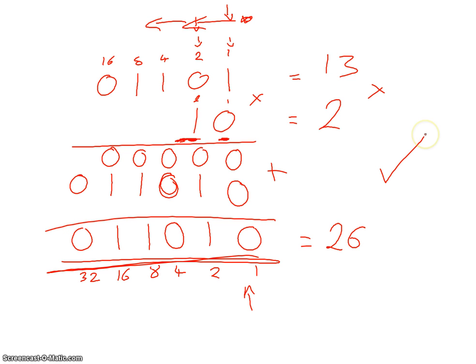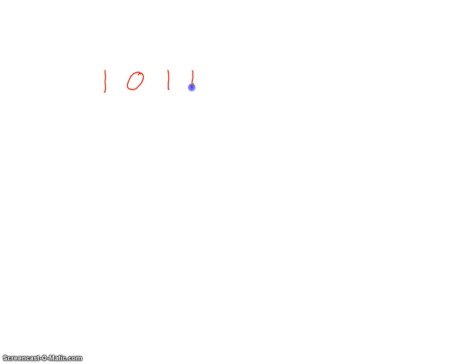We'll do one more example to show the process again, making it a little bit longer and more difficult. This time we'll do 1011010 and multiply that by 11.